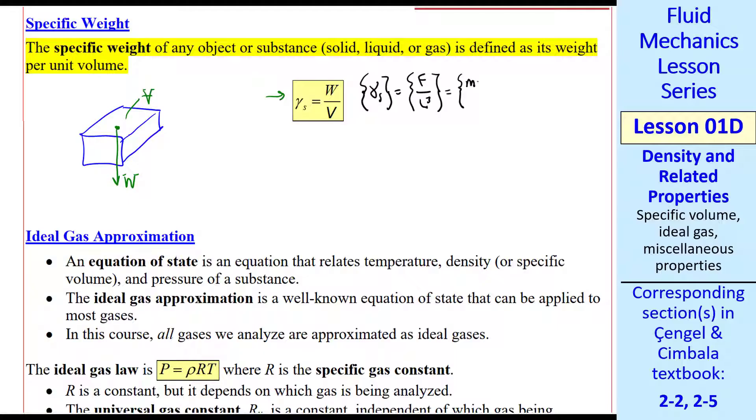The dimensions are now a force per volume. Force is mass times acceleration, ML over t squared, and our L cubed is at the bottom. So this reduces to M over L squared t squared. Typical units, since it's a force per volume, are newtons per meter cubed.